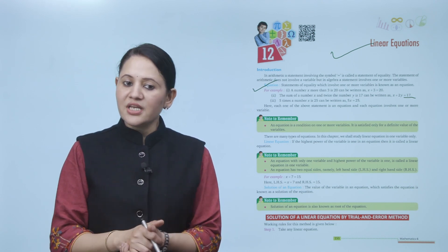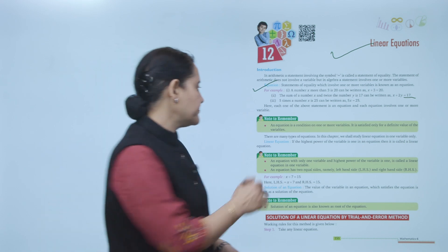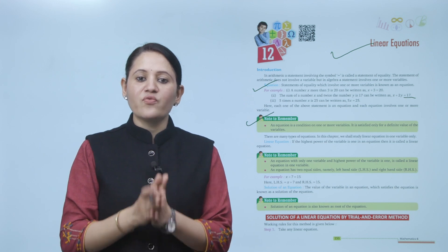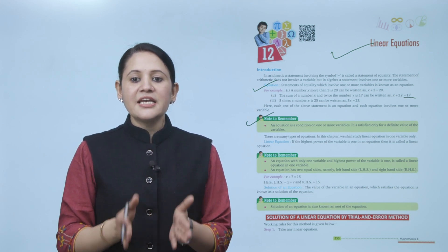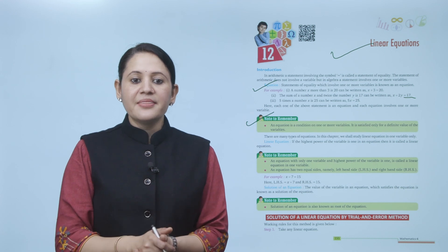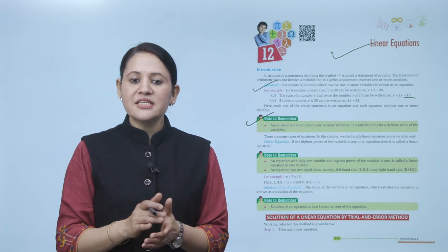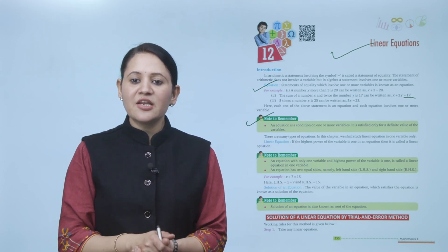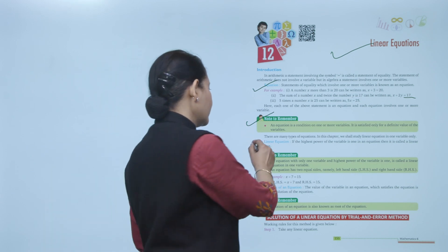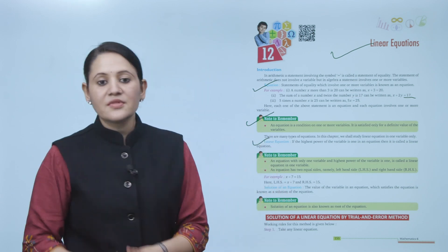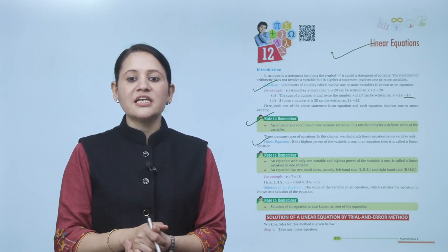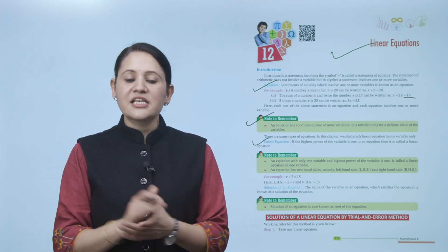Note to remember: an equation is a condition on one or more variables. It is satisfied only for a definite value of the variable. There are many types of equations. In this chapter we shall study linear equations in one variable only. A linear equation is one where the highest power of the variable is one.